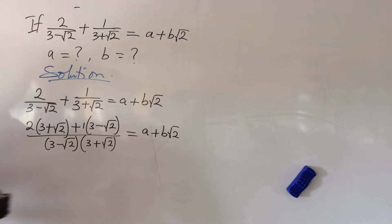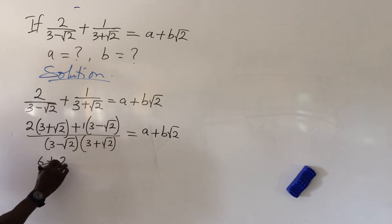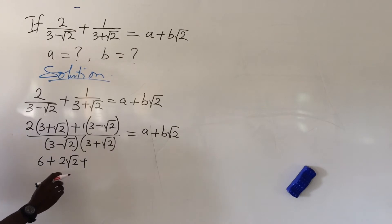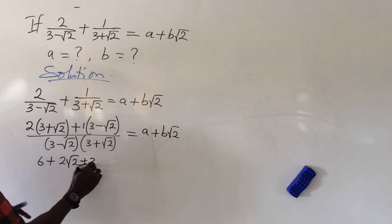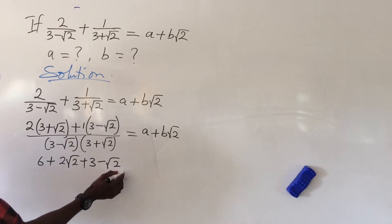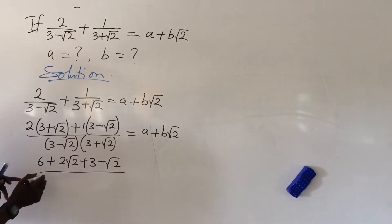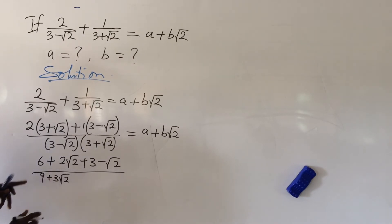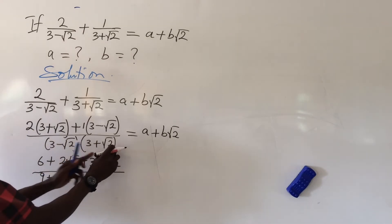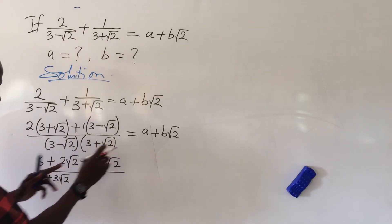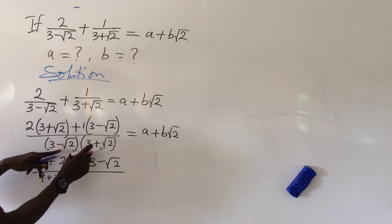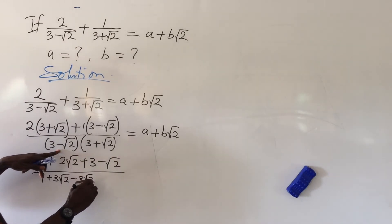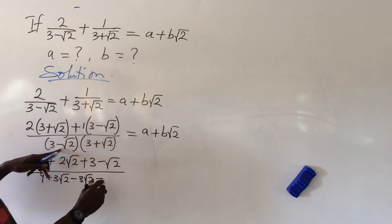Opening up the brackets: 2 times (3 plus root 2) gives us 6 plus 2 root 2. Then we use 1 to open up (3 minus root 2) to give us 3 minus root 2. For the denominator, expanding (3 plus root 2)(3 minus root 2) gives us 9 plus 3 root 2 minus 3 root 2 minus root 4.